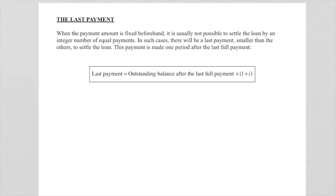In this lesson of last payment we say when a payment amount is fixed beforehand, it is usually not possible to settle the loan by an integer number of equal payments. In such cases there will be a last payment smaller than the others to settle the loan. This payment is made one period after the last full payment. So how do we find this last payment? We work out the outstanding balance right up to the last full payment and then we times it with one month compound interest to get the last payment.